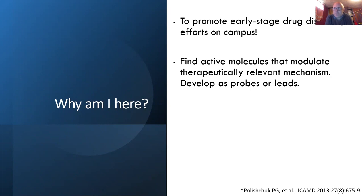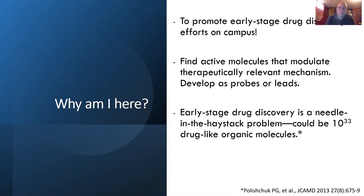Often these are disease mechanisms that you want to interfere with. If we find active molecules, these can be developed as probes to study the mechanism, or they could be developed as leads for a therapeutic or a drug. Early stage drug discovery is really difficult — it's like a needle in a haystack problem. The drug-like chemical space is huge: there are like 10 to the 33 theoretically feasible drug-like organic molecules, possibly as high as 10 to the 60.